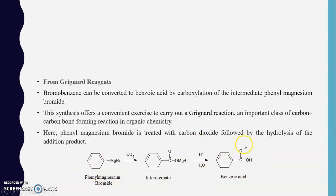Indirectly, benzoic acid is synthesized from bromobenzene: bromobenzene is first converted to phenylmagnesium bromide (the Grignard reagent). Carbon dioxide is passed through phenylmagnesium bromide, forming an intermediate. This intermediate undergoes acidic hydrolysis to yield benzoic acid. Grignard reagents represent an important class of carbon compounds in organic chemistry, readily converted into other functional groups.